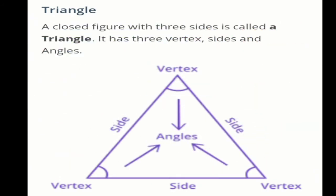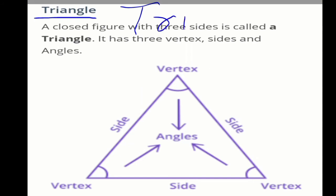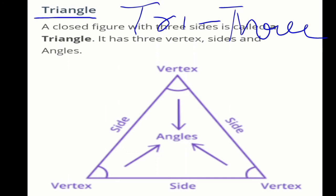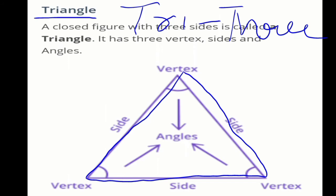First of all, what is a triangle? Tri means 3. A triangle is a closed figure — the triangle is completely closed, no point is open. So a triangle is a closed figure with 3 sides.